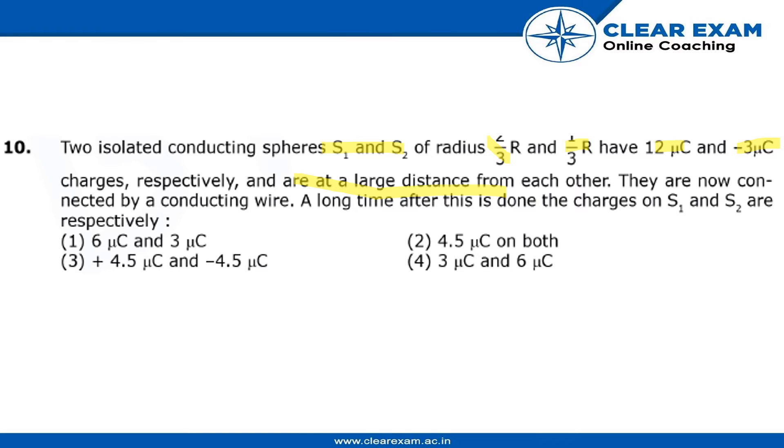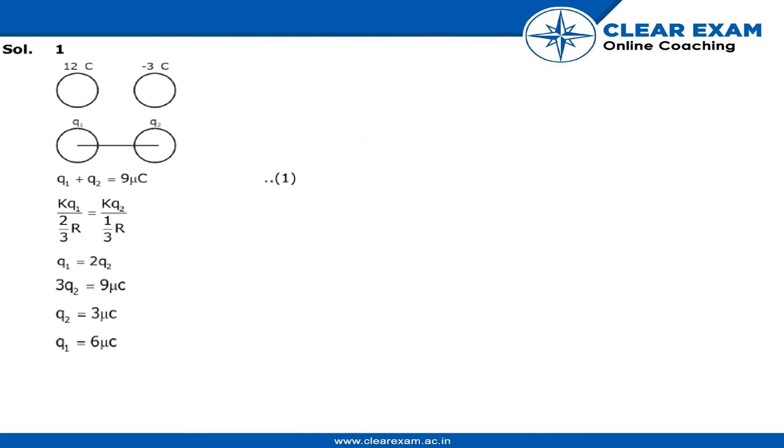Let's see the solution. Initially it is 12 coulomb and -3 coulomb. When you join these two spheres by a conducting wire, the net charge Q1 + Q2 will become 9 microCoulomb. We can write that kQ1/(2/3r) = kQ2/(1/3r).